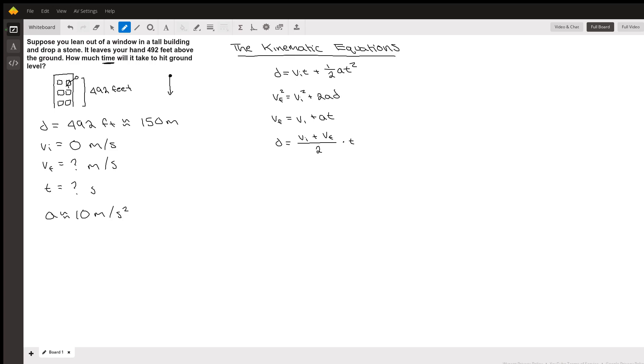We know the initial velocity of the stone because we're just dropping it, so the initial velocity is zero. It starts at not moving at all until we drop it. The final velocity we don't know—we have no idea how fast it's going to be going the moment before it hits the ground. The time it takes to hit the ground we also don't know because that's what we're solving for.